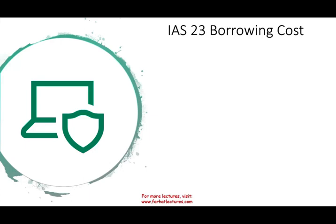Let's talk about IAS 23 or borrowing cost. The big idea: borrowing cost, simply put, if you want to translate it into language we're more familiar with, it's interest expense — the cost of borrowing money. This standard tells us what to do with interest expense. The general rule is when you borrow money and incur interest expense, you have to expense it.